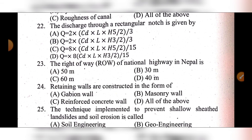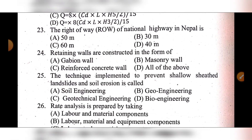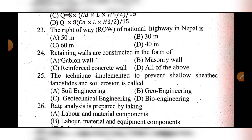Question 24: Retaining walls are constructed in the form of — option A: cantilever, option B: masonry, option C: reinforced concrete, option D: all of the above. The answer is option D: all of the above — retaining walls are constructed in the form of cantilever, masonry, and reinforced concrete.